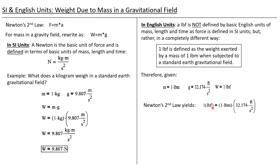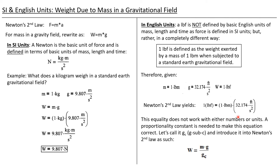Sometimes students believe that pound-force is defined the way a Newton is in SI units, and so they say a pound-force is a pound-mass foot per second squared. Well if that were true, the units on both sides of the equation would match. However, we would have just calculated that the weight of one pound-mass on the earth's surface is over 32 pounds-force, and we know that this is not true. So we need to solve this problem according to the definition given for the basic unit of force.